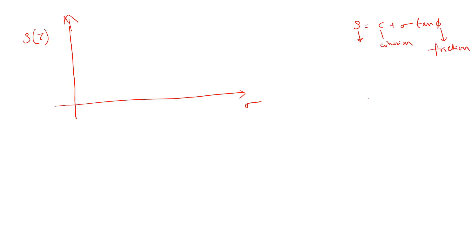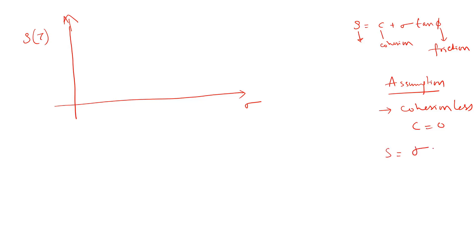For Rankine's theory — whether passive or active — the main assumption is that it is applicable for cohesionless soils, meaning C = 0. So the failure envelope becomes τ = σ·tan(φ), which is a straight line passing through the origin with slope equal to tan(φ).